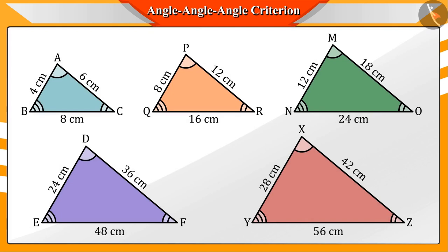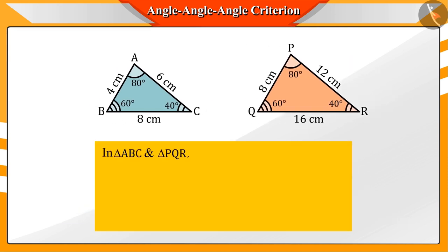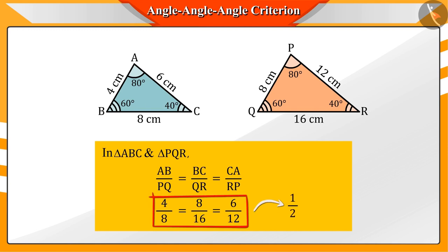Let the value of the corresponding angles of all triangles be 80, 60 and 40 degrees respectively. If we notice triangles ABC and PQR, we see that their corresponding sides AB and PQ, BC and QR, and CA and RP are all in the ratio of 1 by 2.